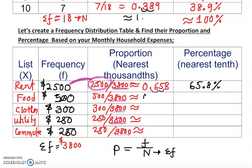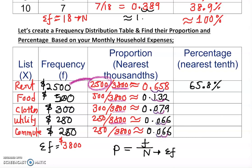Using the calculator: 500/3800 ≈ 0.132, so 13.2%. Then 300/3800 ≈ 0.079, so 7.9%. Then 250/3800 ≈ 0.066, so 6.6%. And the last 250/3800 is also 0.066, so 6.6%. To get percentages, just move the decimal two places to the right each time.